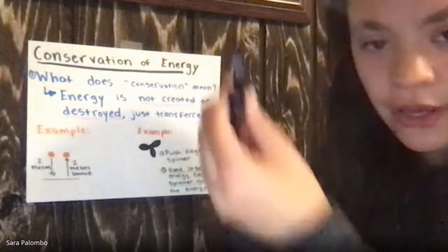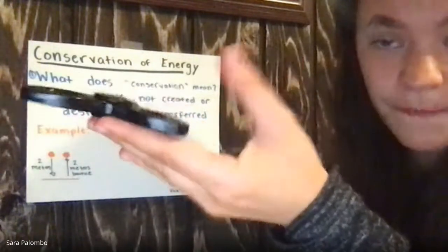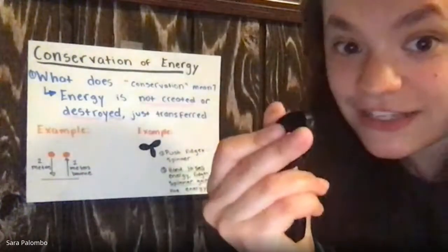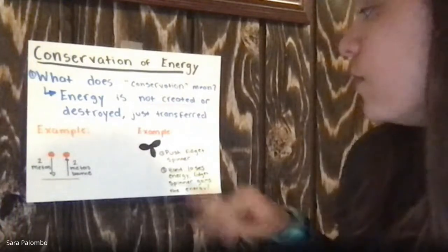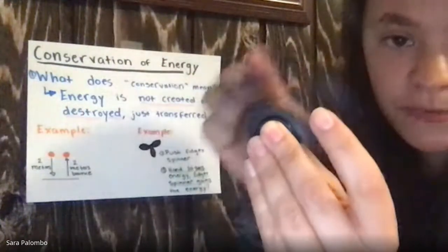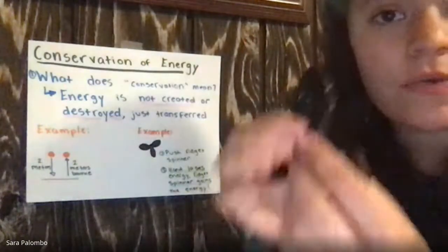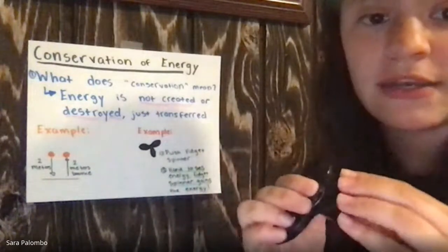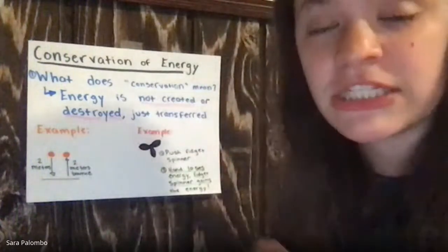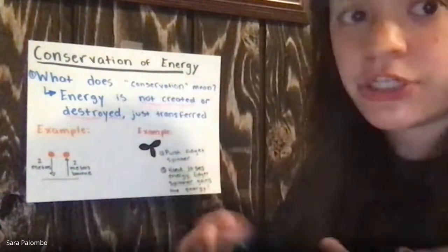For example, I have this fidget spinner here. If it's not moving, it has no energy. But if I push it, then it does. When I push it, my hand is losing that energy and the fidget spinner is gaining that energy, which is what actually makes it able to move. There's no energy being destroyed or created — it's just moving from my hands to the fidget spinner. That goes for any object that you move; you're just transferring energy from you to that object. It takes energy to move something.